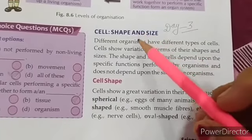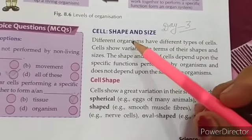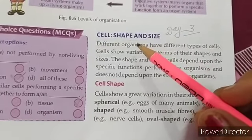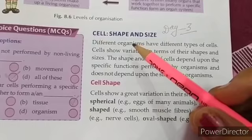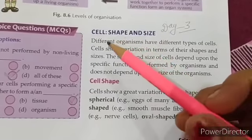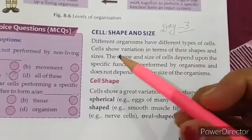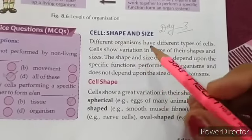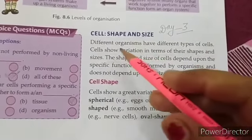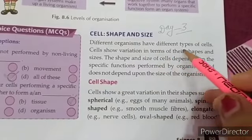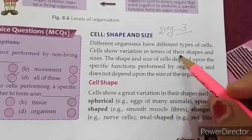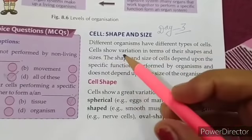We have started this chapter and discussed about cell level of organization from cell to organism. Today we will discuss cell shape and size. Different organisms have different types of cells. Cells show variation in terms of their shape and size.